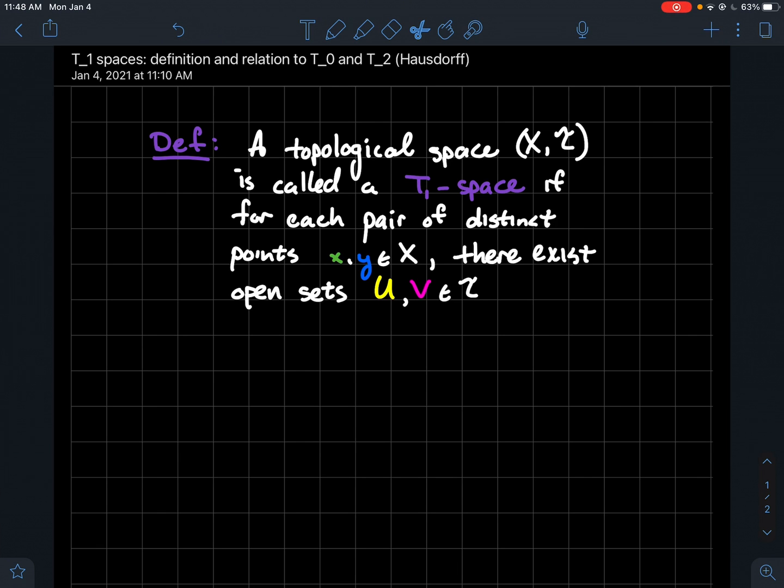So what does it mean for a topological space (X,T) to be a T1 space? By the way, X is just a set and T is a topology on that set. So we'll say that (X,T) is a T1 space if for each pair of distinct points x and y, little x and little y, in your set X, there should exist open sets U and V. So when I say open sets I just mean that U and V are members of the topology such that we get the following picture.